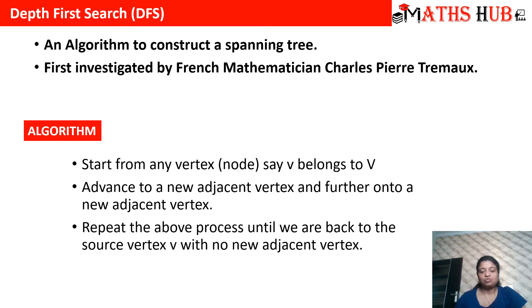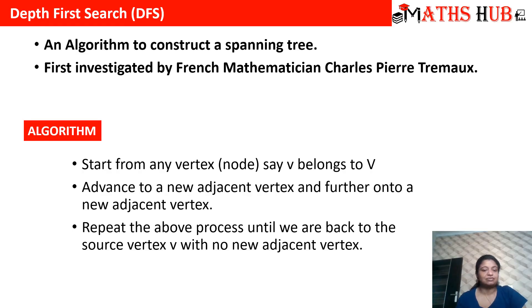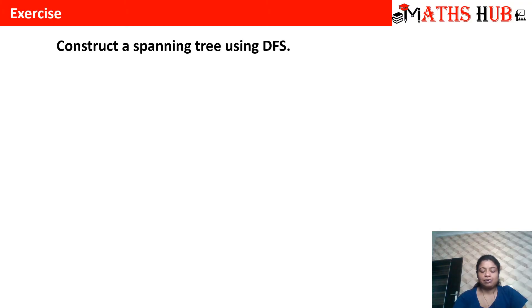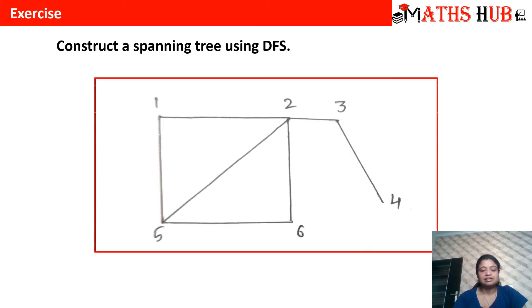We have to advance to a new adjacent vertex and repeat the process until all the vertices have been covered, then backtrack to the first vertex from where we started. Let us apply this to a problem and see what type of spanning tree we get.